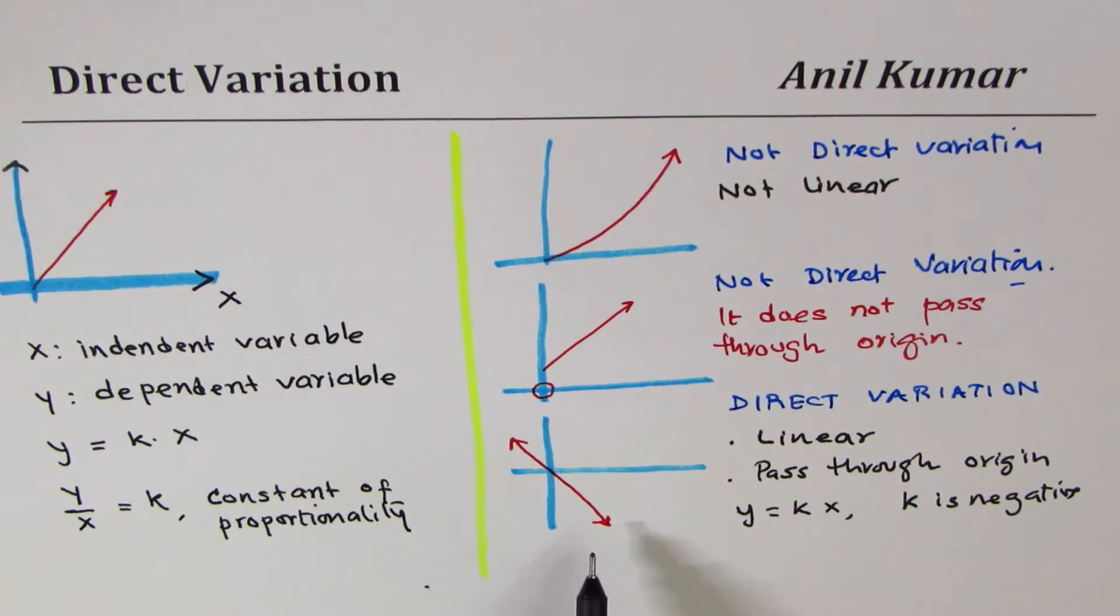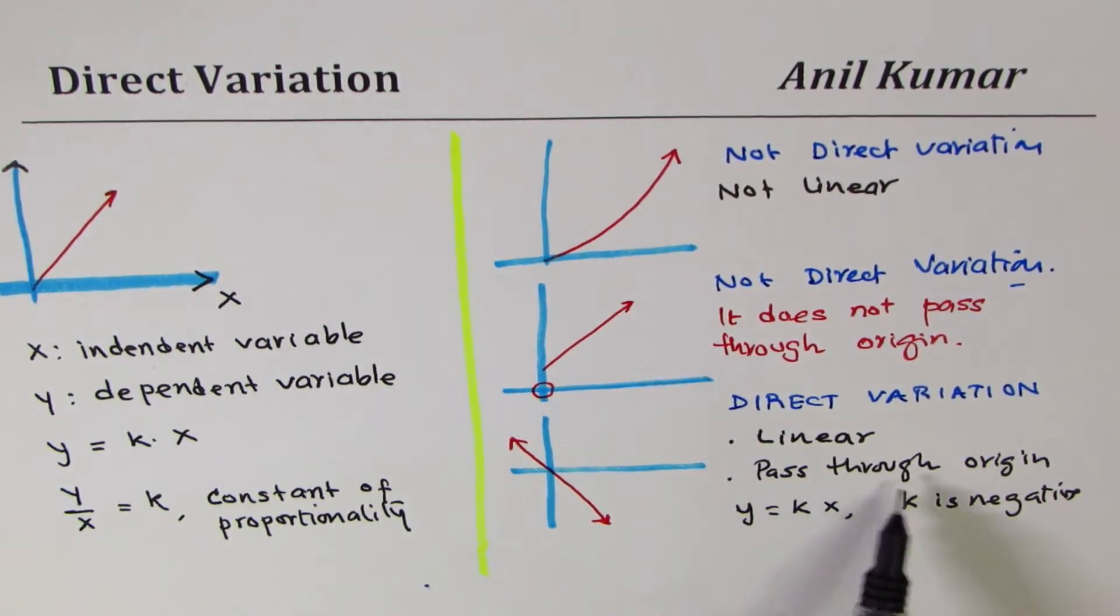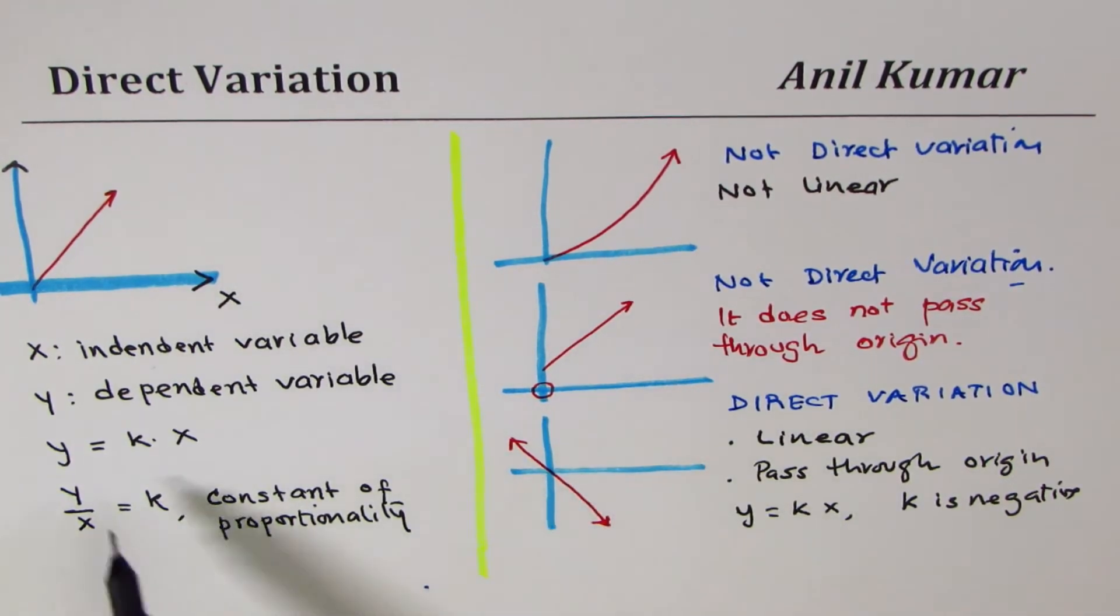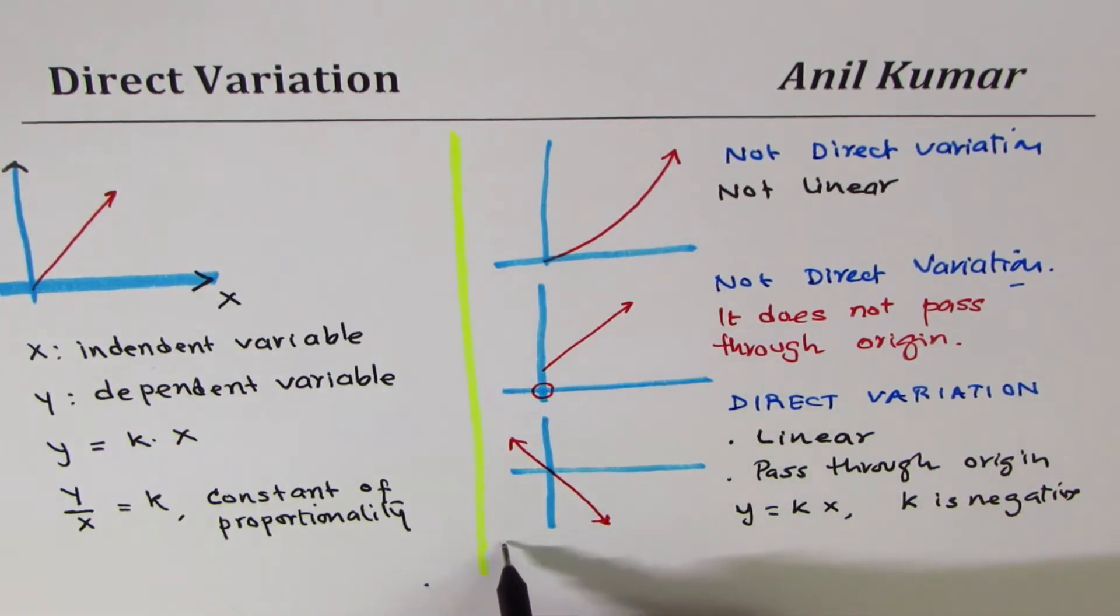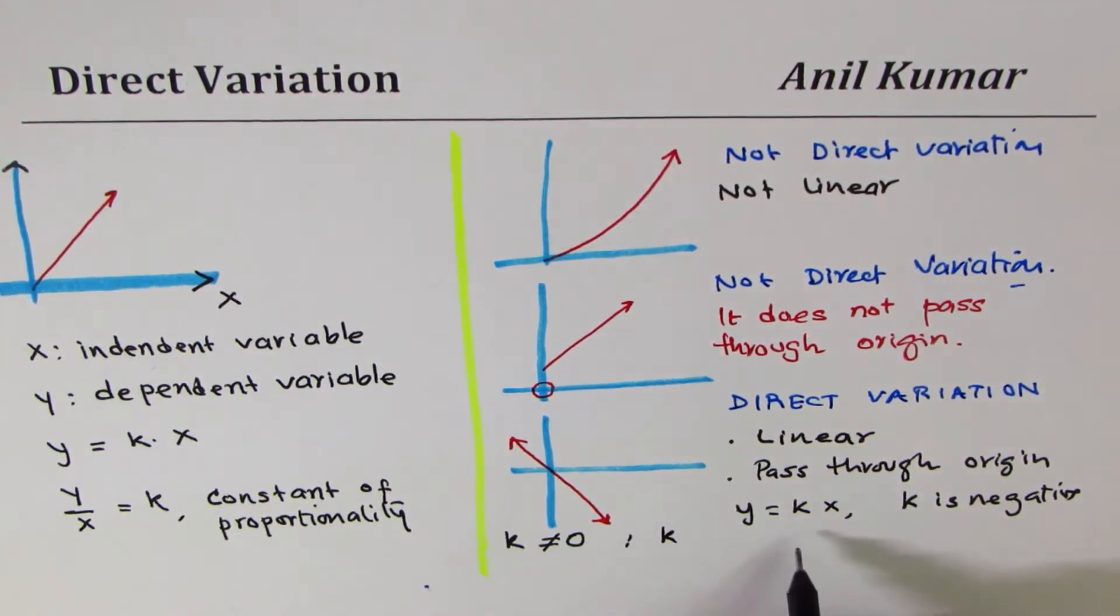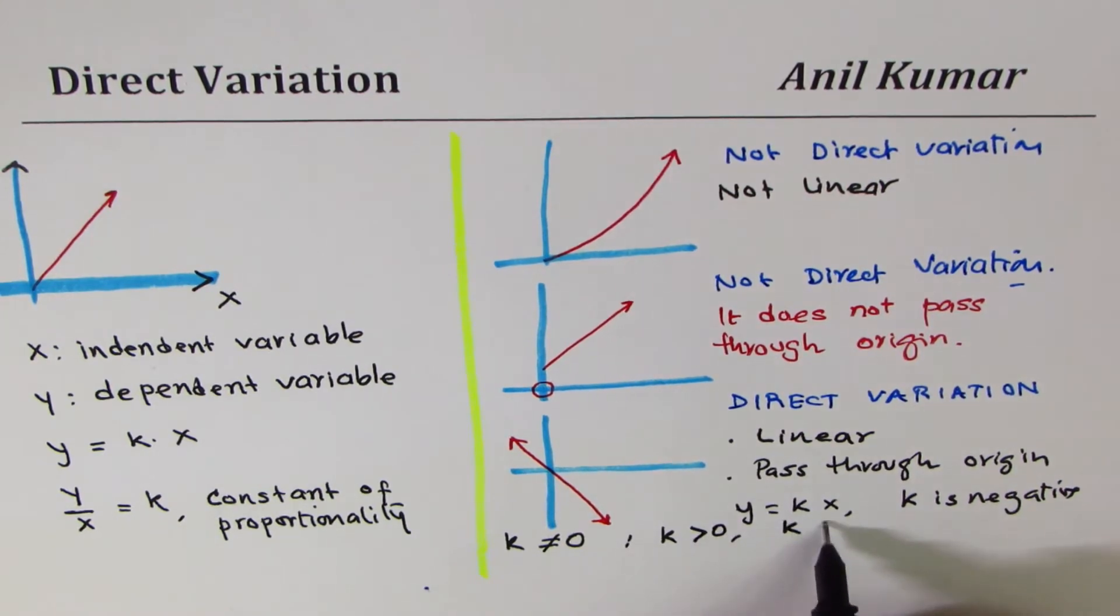So in case of a direct variation it is important to note that it should be linear and pass through origin. It could be rising or falling, k could be negative or positive. The important point here is that k is not equal to zero. However k could be anything else, k could be greater than zero or k could be less than zero.